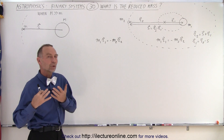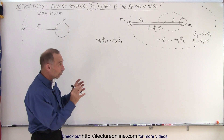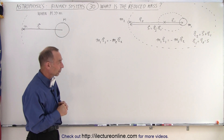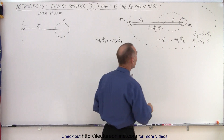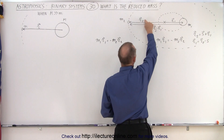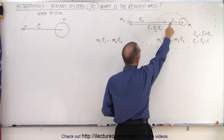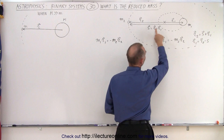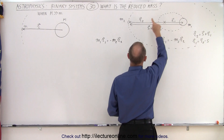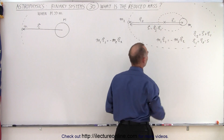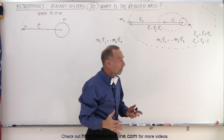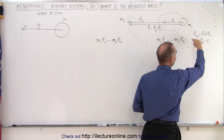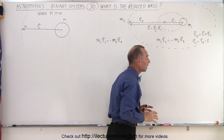We'll show you how that reduced mass is calculated and then try to understand the key concept of the reduced mass. First of all, we go back to our two vectors. We have the R2 vector, which points to the small mass, and the R1 vector, which points to the large mass relative to the barycenter. And then we have a vector that goes from the large mass to the small mass, which is called S, which is R2 minus R1.